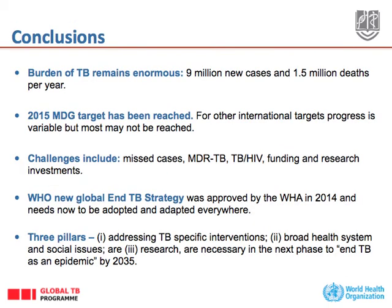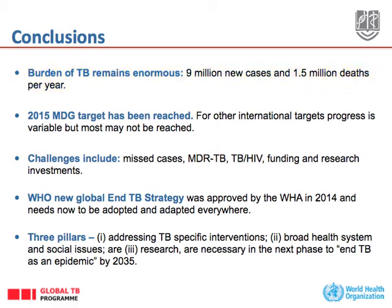Conclusions: the burden of tuberculosis remains enormous, with 9 million new cases and 1.5 million deaths per year. The 2015 Millennium Development Goal target for tuberculosis — making incidence decline — has been reached. However, other international targets have not.